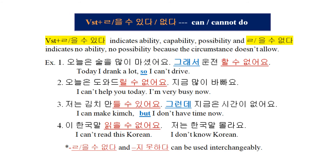Verb stem plus 을 수 있다 indicates ability, capability, and possibility. And 을 수 없다 indicates no ability or no possibility because the circumstance doesn't allow. Example 1: 오늘은 술을 많이 마셨어요. 그래서 운전할 수 없어요. — Today I drank a lot, so I can't drive.